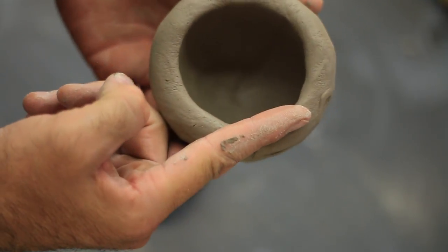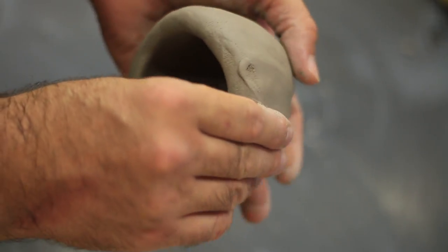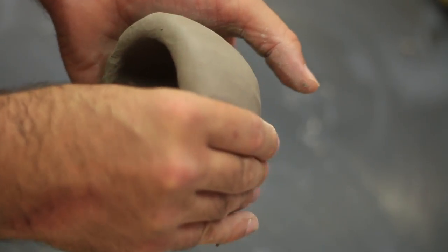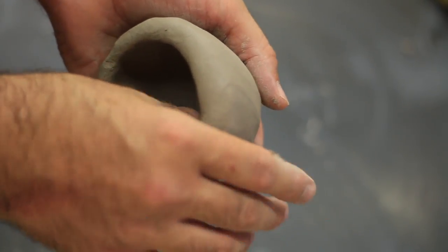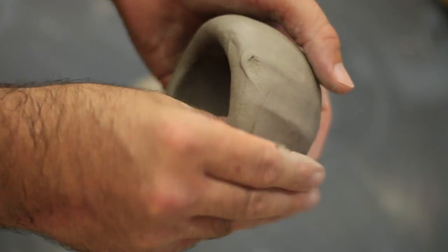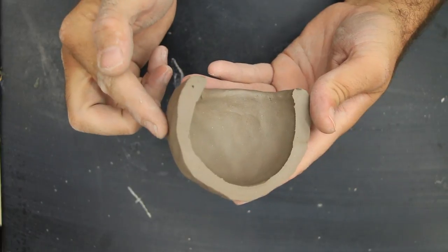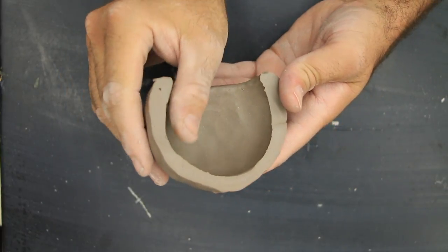Once you've gotten some of the thickness out of the middle section of the pot, you can move to the upper section of the pot. Ultimately, what we're going for is to have the rim of our pot about the thickness of our finger turned sideways. If you get the rim too much thinner than that, it'll be difficult to join the two pieces together. So take it easy. Try not to pinch the top too much.